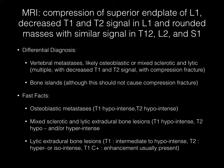T1 and T2-weighted sagittal MR images of the spine demonstrate compression of the superior end plate of L1 as well as decreased T1 and T2 signal in L1. There are also rounded masses with similar signal characteristics in T12, L2, and S1. The differential diagnosis should include vertebral metastases, likely osteoblastic or mixed sclerotic and lytic. This is supported by multiple lesions with decreased T1 and T2 signal and a compression fracture. A secondary consideration could include bone islands, although this should not cause a compression fracture.